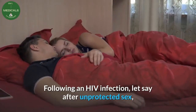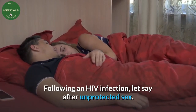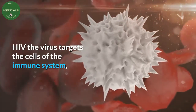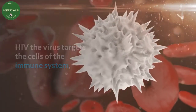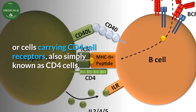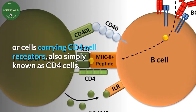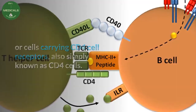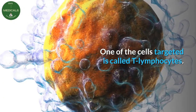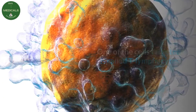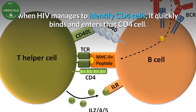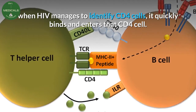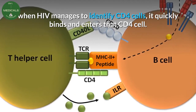Following an HIV infection — let's say after unprotected sex — HIV targets the cells of the immune system, specifically cells carrying CD4 cell receptors, also simply known as CD4 cells. One of the cells targeted is called T lymphocytes. When HIV manages to identify CD4 cells, it quickly binds and enters that CD4 cell.